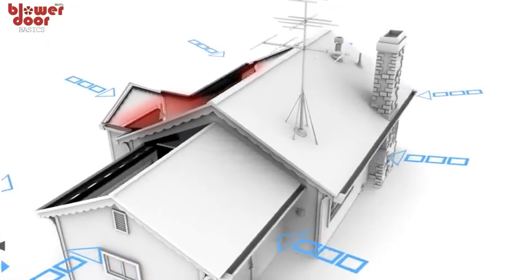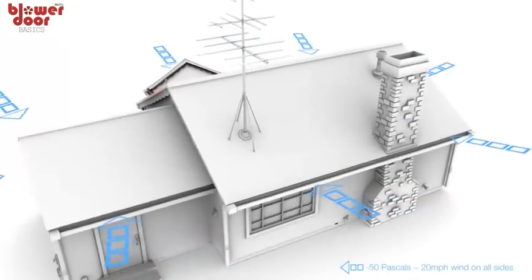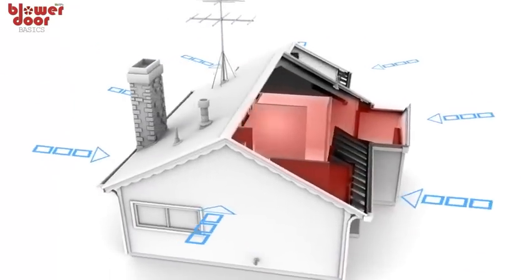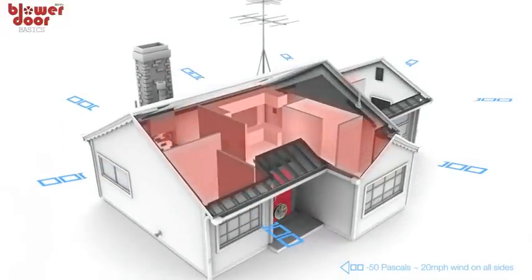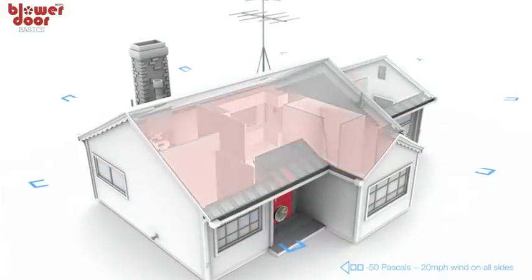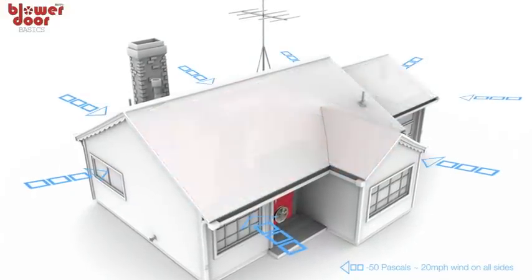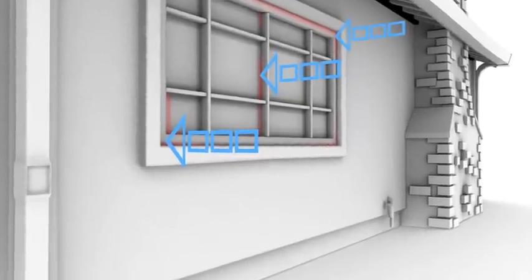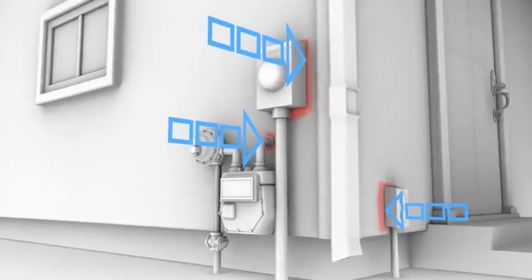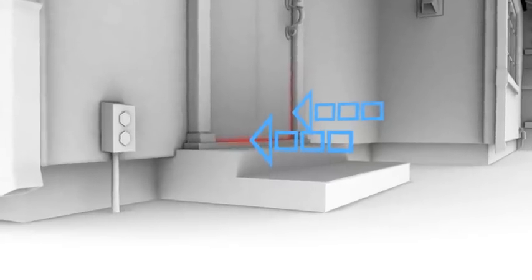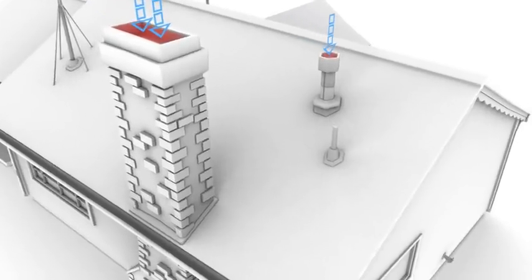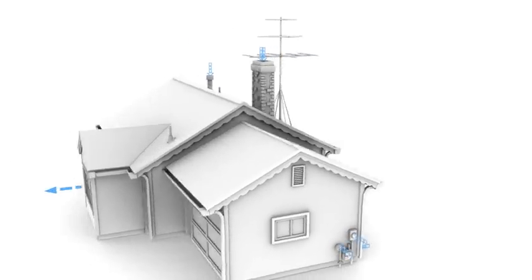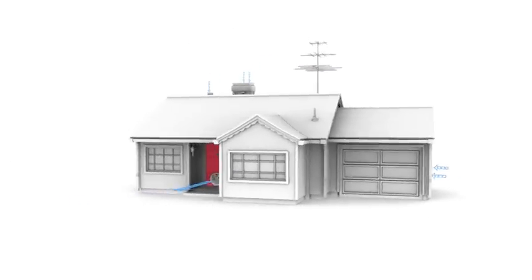Air wants to enter the home to equalize the pressures of the outside and inside environments. But instead of a natural wind pushing air inside the home, we are essentially using depressurization inside the home to suck air in through gaps in windows, pipe penetrations, improperly sealed doors, and leaky flue dampeners. These are the penetrations and gaps we look for when evaluating a home for air sealing measures.